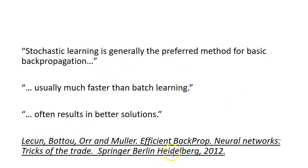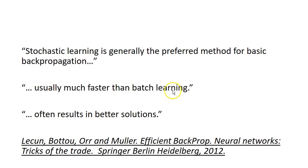The paper by LeCun, Bottou, Orr and Mueller called Efficient Backprop states that stochastic learning — which is stochastic gradient descent — is generally the preferred method for basic backpropagation. They also say it is usually much faster than batch learning and often results in better solutions. So they also prefer stochastic gradient descent.